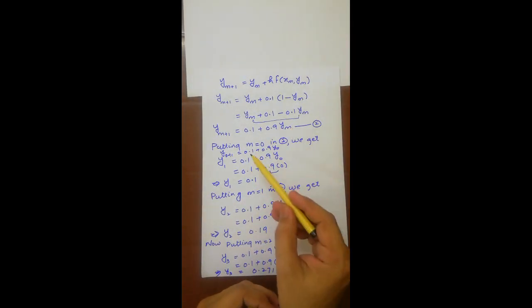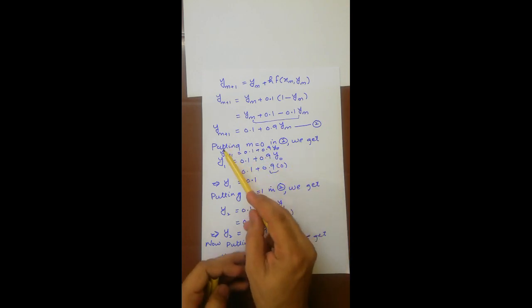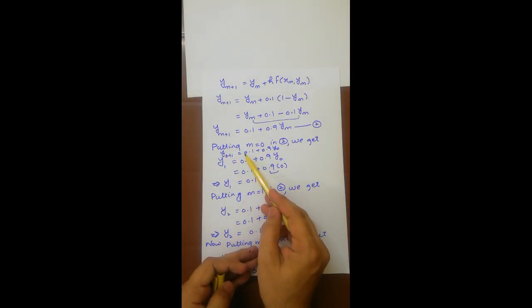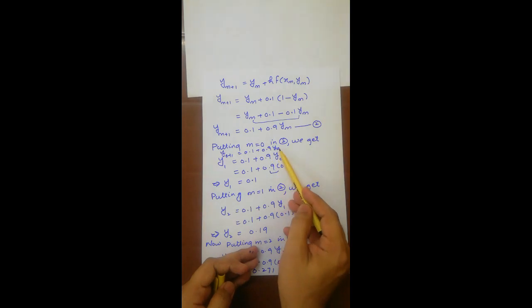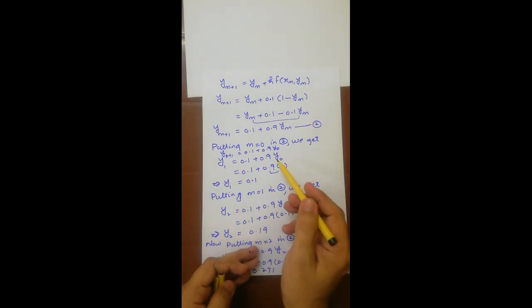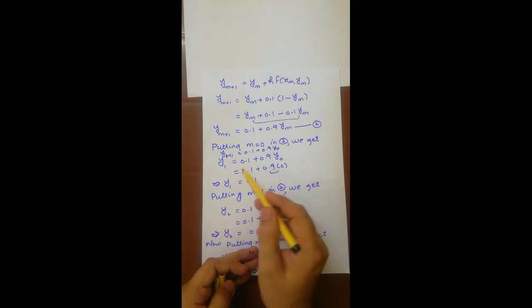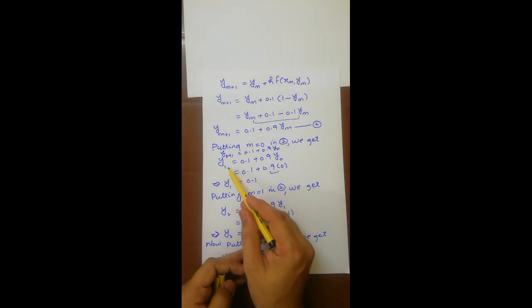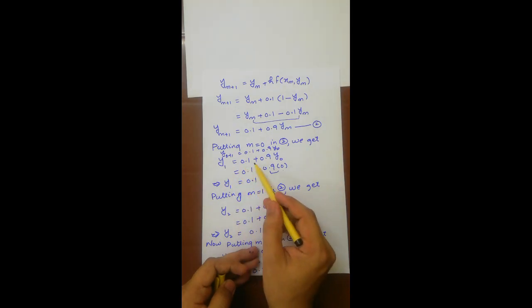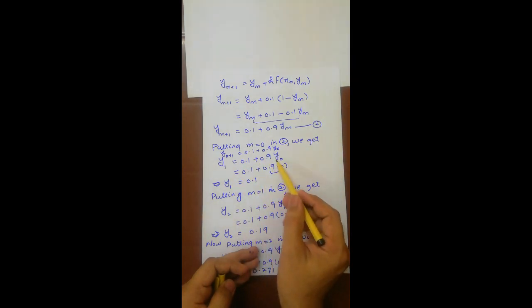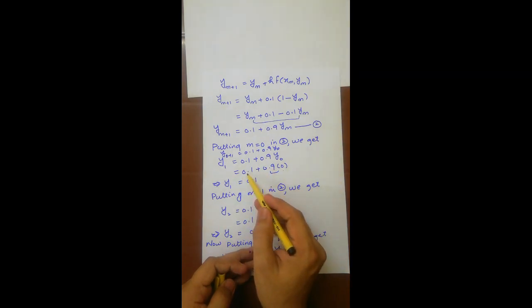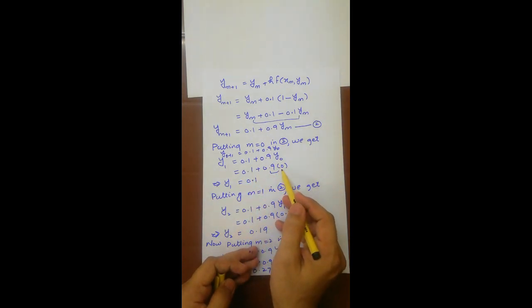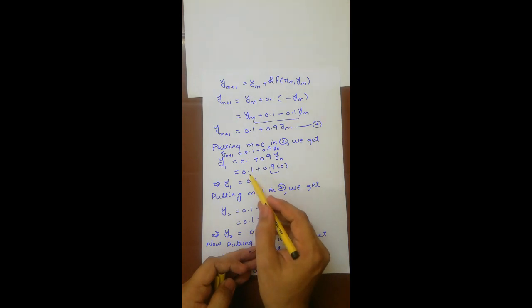Now put m = 0 into the formula. We get y₁ = 0.1 + 0.9·y₀. Since y₀ = 0 from the initial condition, this becomes y₁ = 0.1 + 0.9(0) = 0.1.